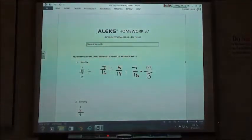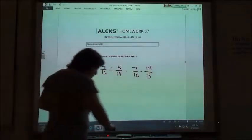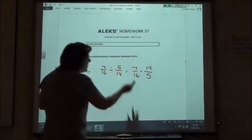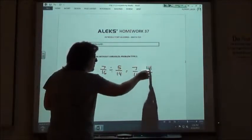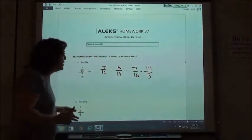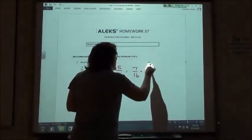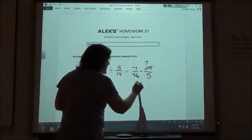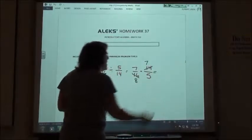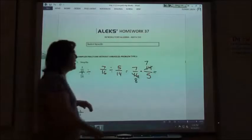We also said, when we're multiplying fractions, we can reduce first so our numbers aren't so big. The 7 and the 5 don't reduce, but the 14 and the 16 I can divide by 2. 2 goes into 14 7 times, 2 goes into 16 8 times. And then we just multiply across the top and multiply across the bottom.